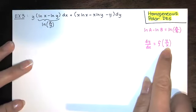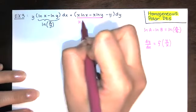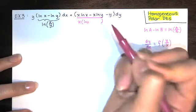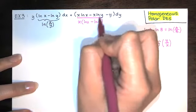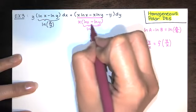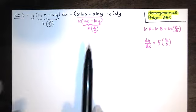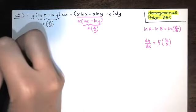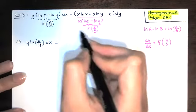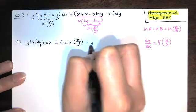And that's starting to look a lot like y over x. Here I've got two terms that have x's as factors, so I can take an x out. When I factor an x out of these two, I'm left with natural log of x. And now I've got natural log of x minus natural log of y again, which can be written as natural log of x over y.